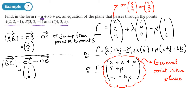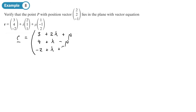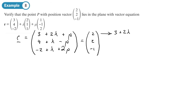Verify that the point P with position vector (2, 2, 1) lies in the plane with that vector equation. The easiest way to do this is to write the vector equation in a single bracket to get a general point: (3 plus 2lambda plus mu), (4 plus 2lambda minus mu), (negative 2 plus lambda plus 2mu). We want to find the values of mu and lambda that make this equal to (2, 2, negative 1). From the top row: 3 plus 2lambda plus mu equals 2, which gives 2lambda plus mu equals negative 1.